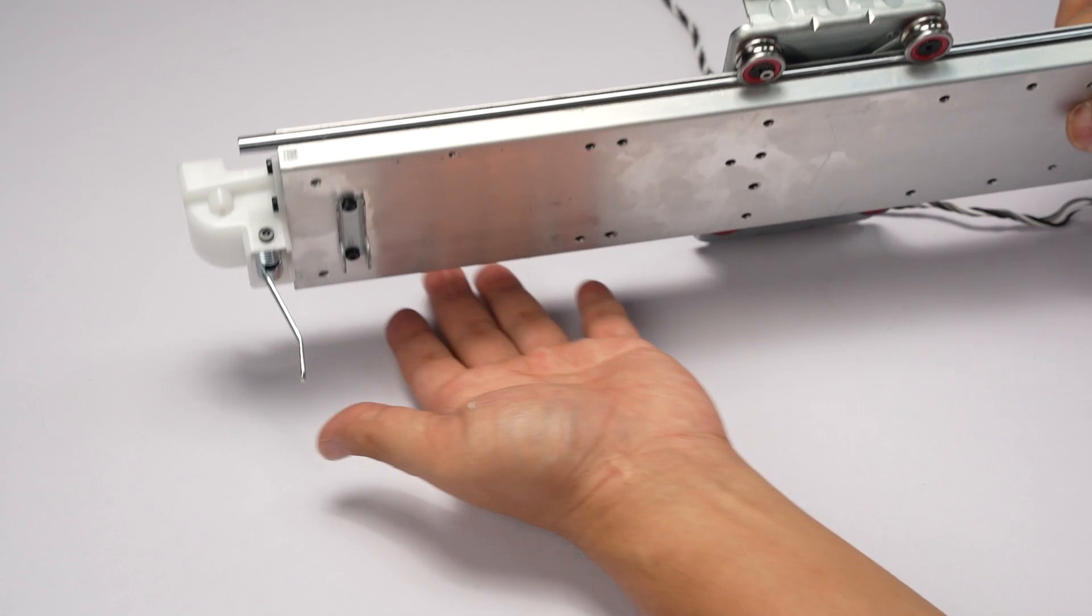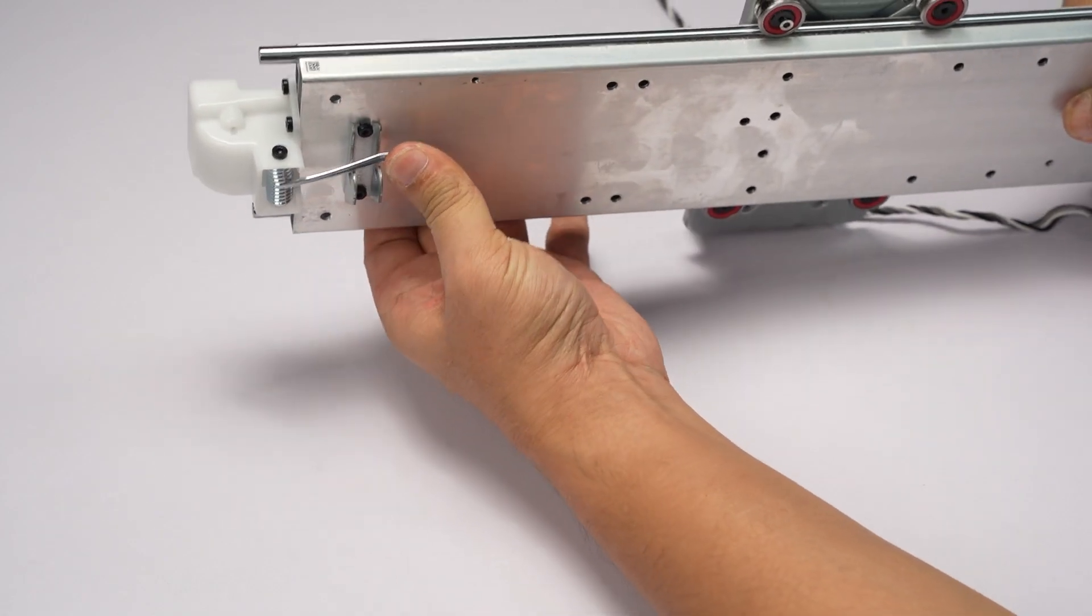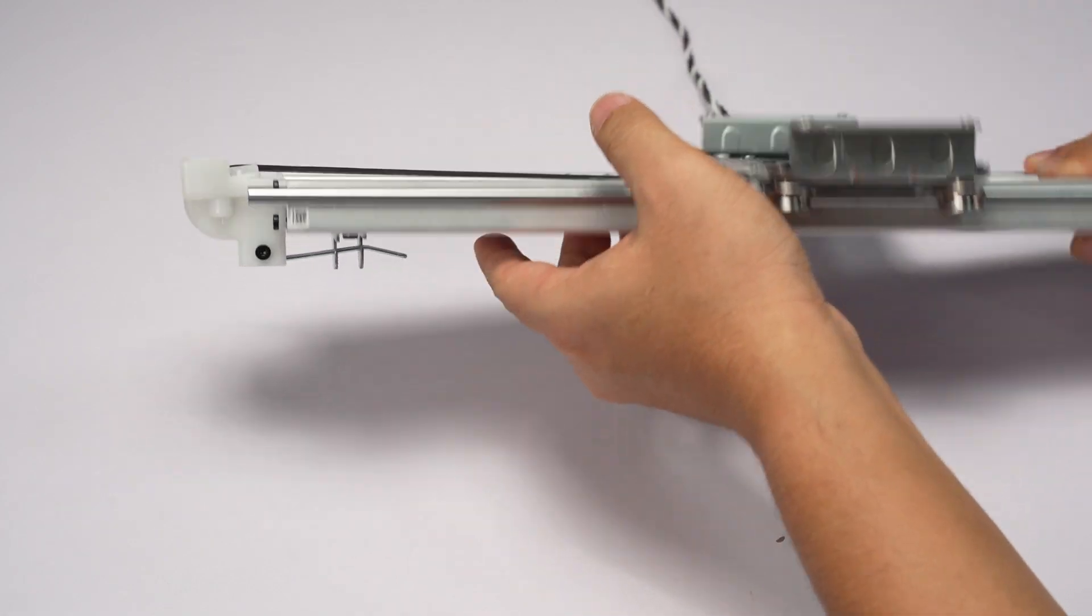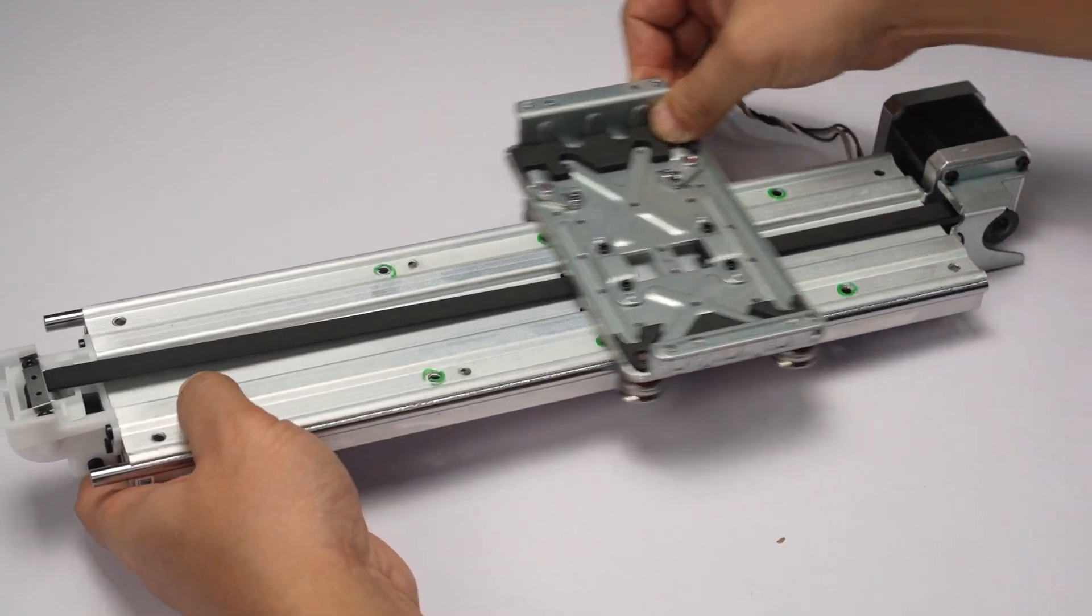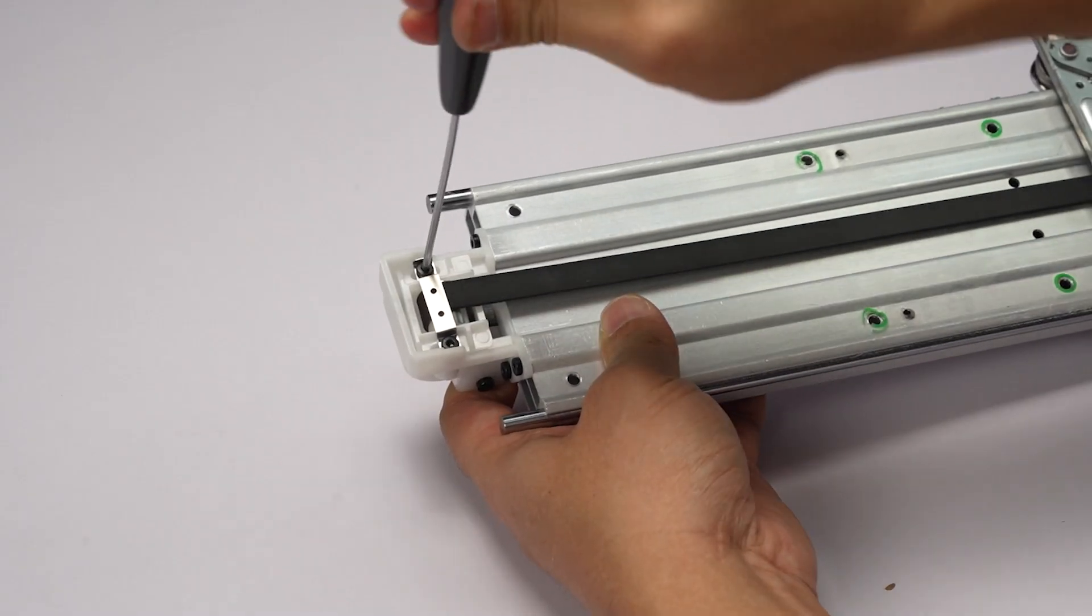Install the tensioning torsion spring on the torsion spring holder. Move the heat bed bracket to confirm that it moves smoothly. Tighten the two tensioning screws.